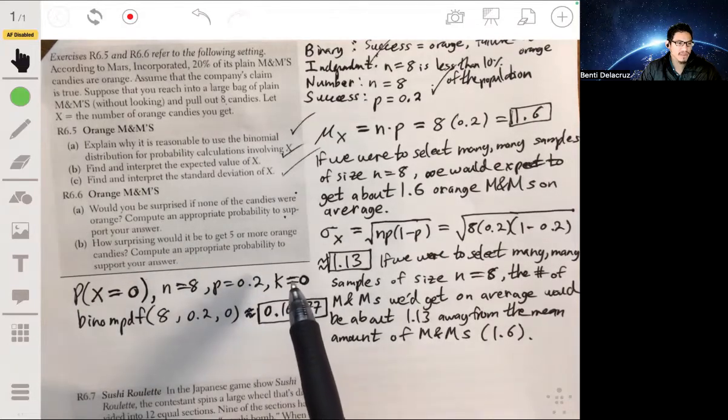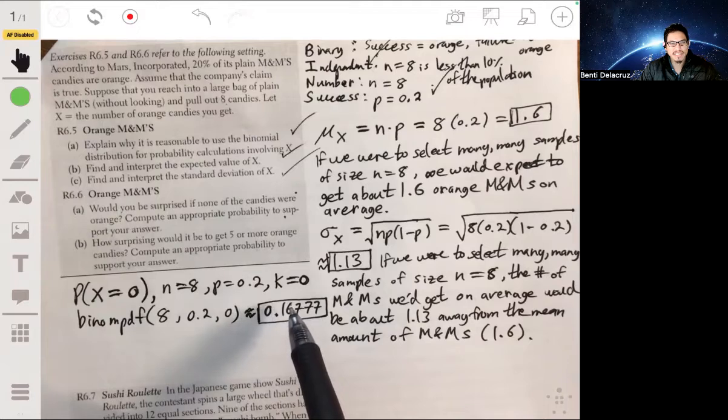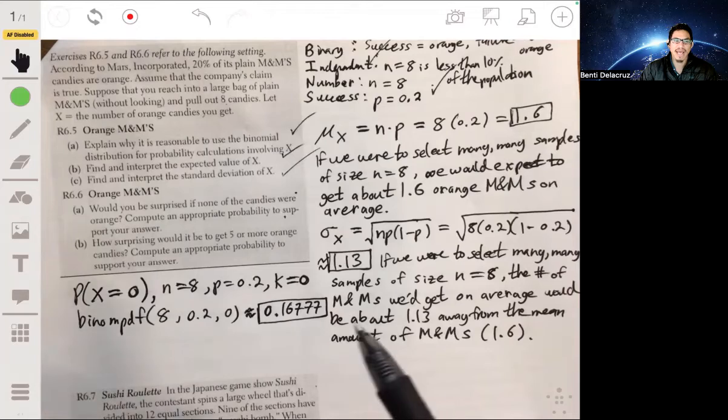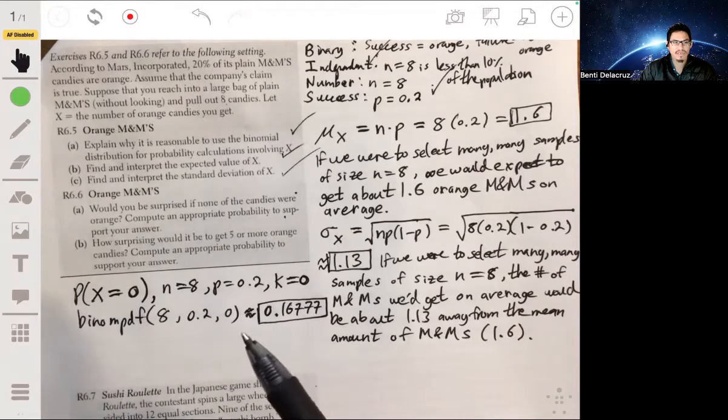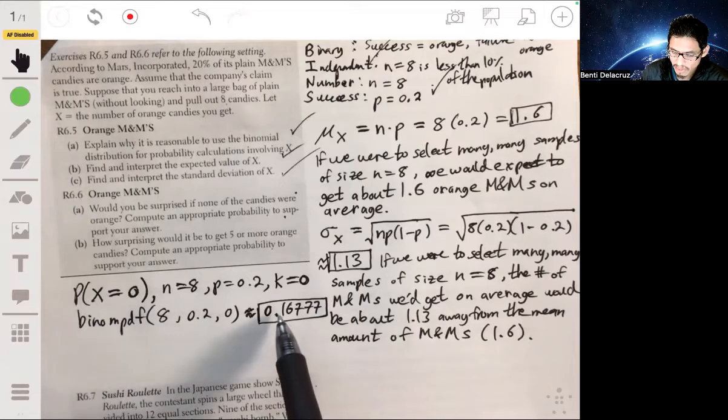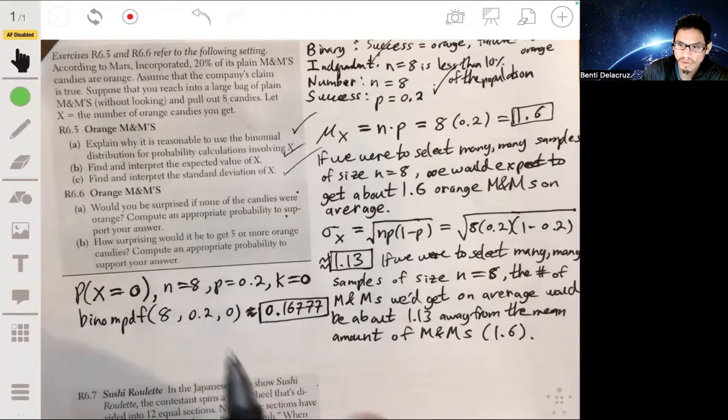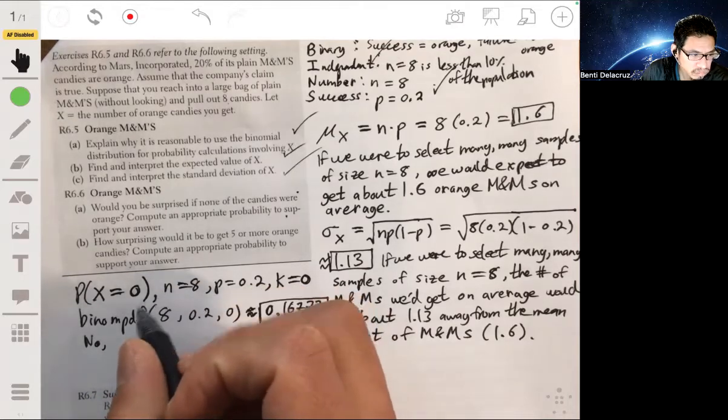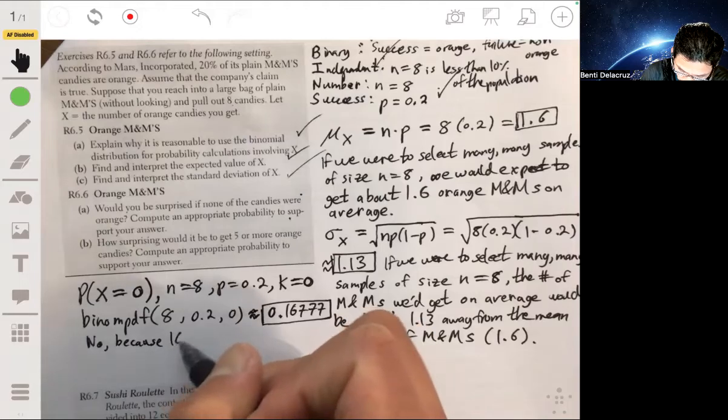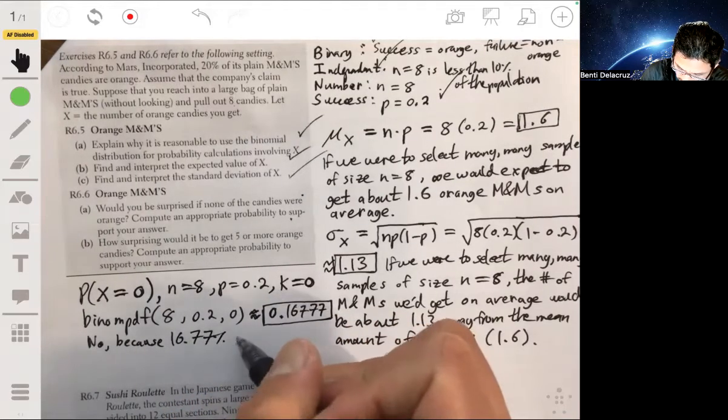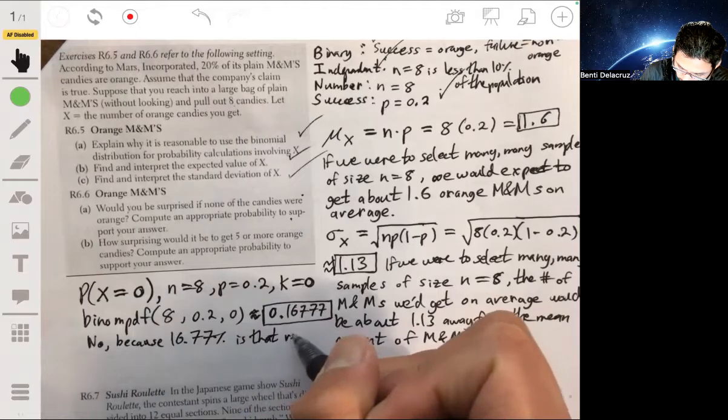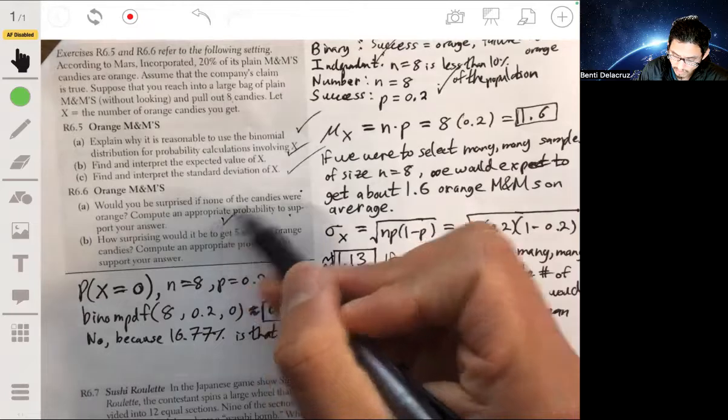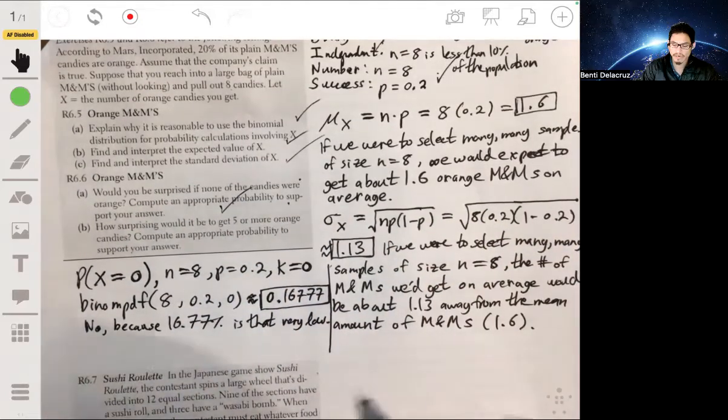Now it's asking if we would be surprised. This wouldn't be that surprising because it is a low percentage - 16, 17% is kind of low. But it's not so low that it's going to be surprising if it were to happen. It's almost like one every six times. So it's low, but no, because the probability is not very low. The 16.7% is not very low probability.